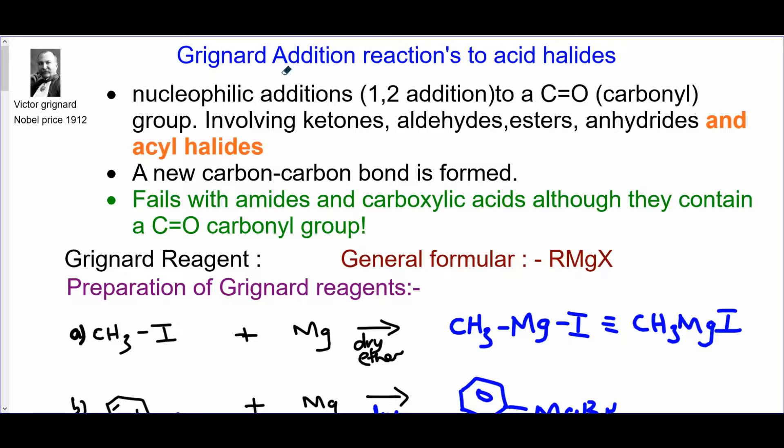It's just another part about Grignard reactions discovered by Victor Grignard, a Nobel Prize winner of 1912. Now the general reaction for Grignard reaction, the most common reaction is a reaction of your carbonyl with a nucleophile, which is 1,2 addition.